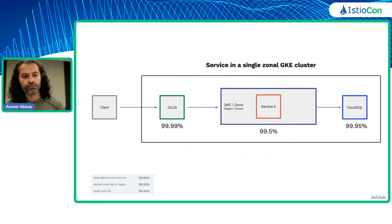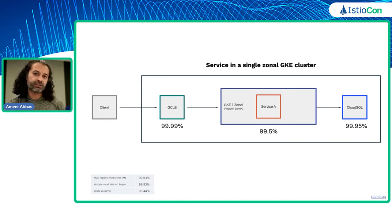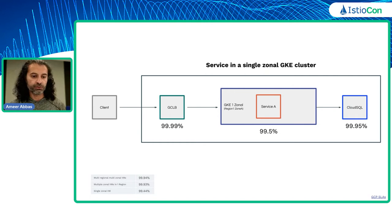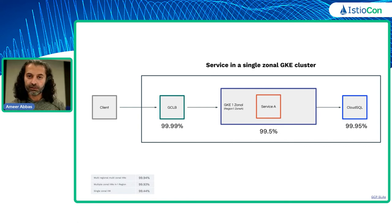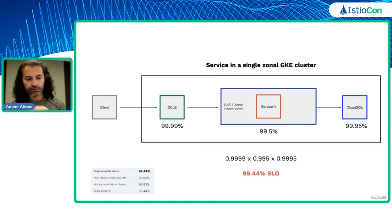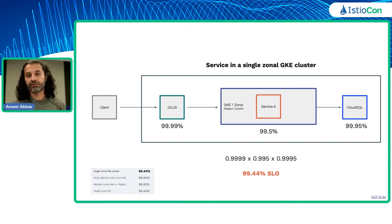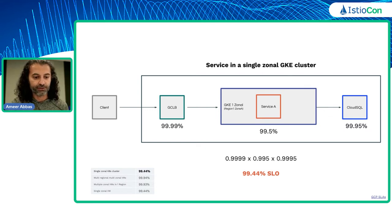Now let's talk about Kubernetes. Same model, but containerized and running in GKE. Starting with a single zonal cluster in region one, zone one: because Kubernetes typically runs on VMs, the SLO is the same as a single zonal VM. Multiply the three SLAs and you get the exact same number. Running in a single zonal Kubernetes cluster versus a single zonal VM is mathematically equivalent.